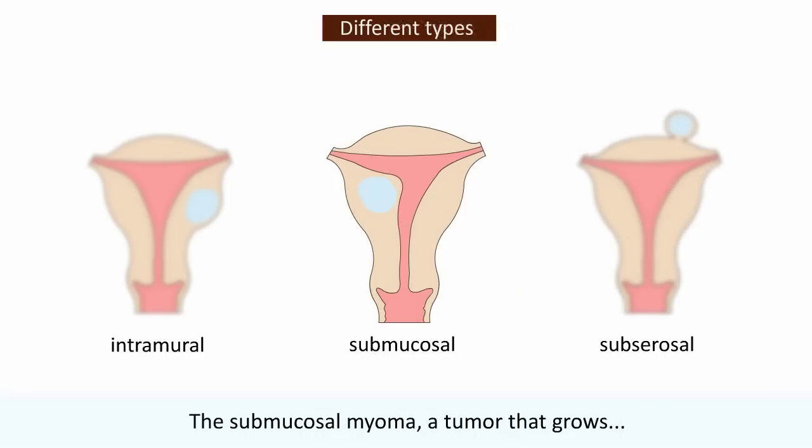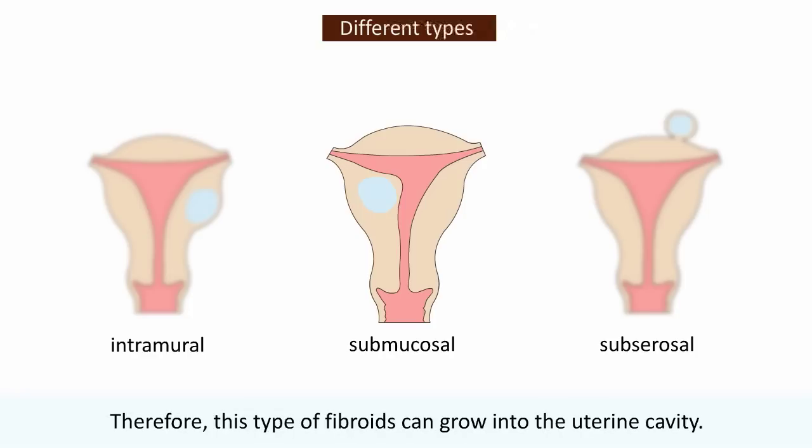The submucosal myoma is a tumour that grows beneath the surface of the uterus lining. Therefore, this type of fibroid can grow in the uterine cavity.